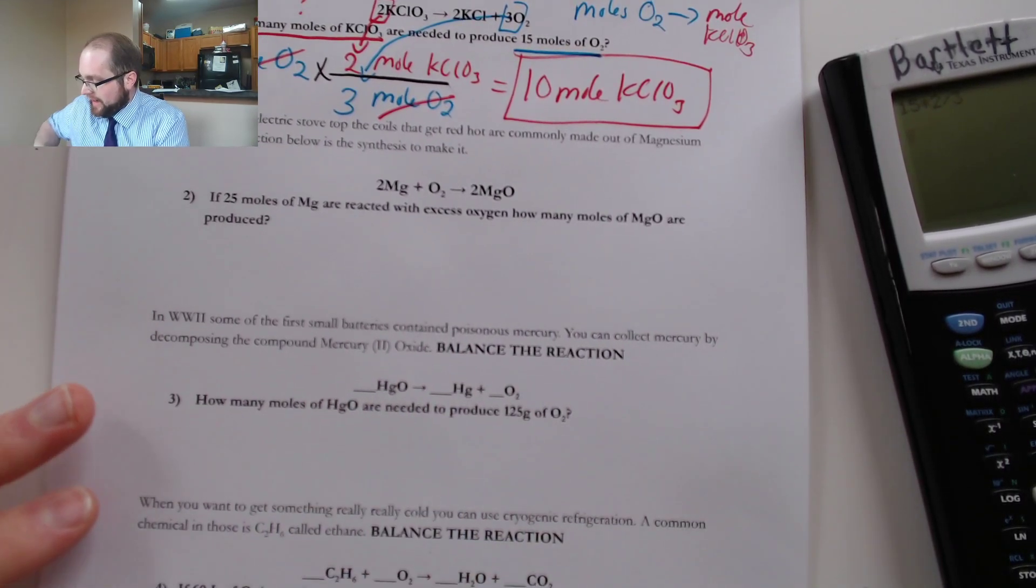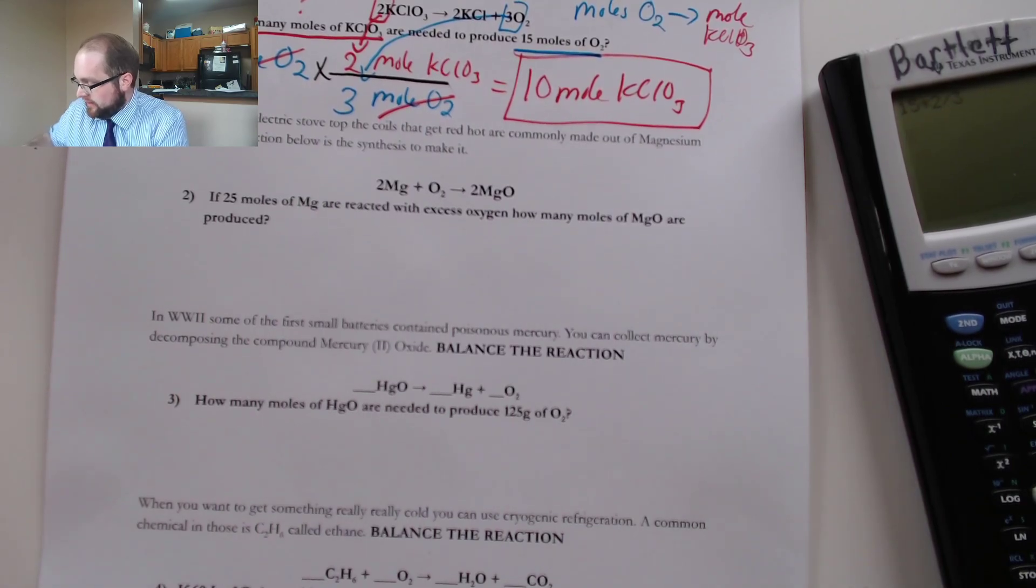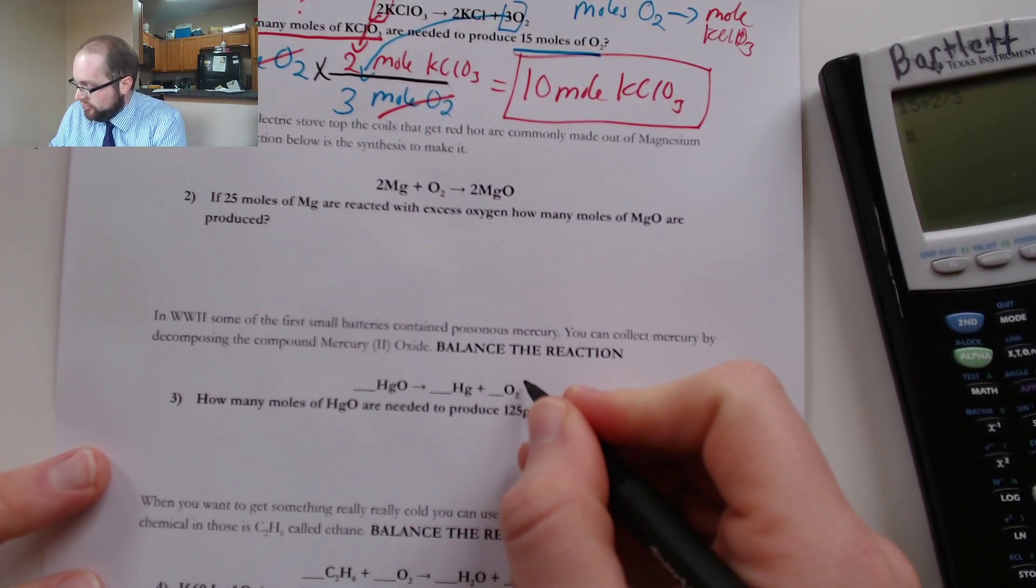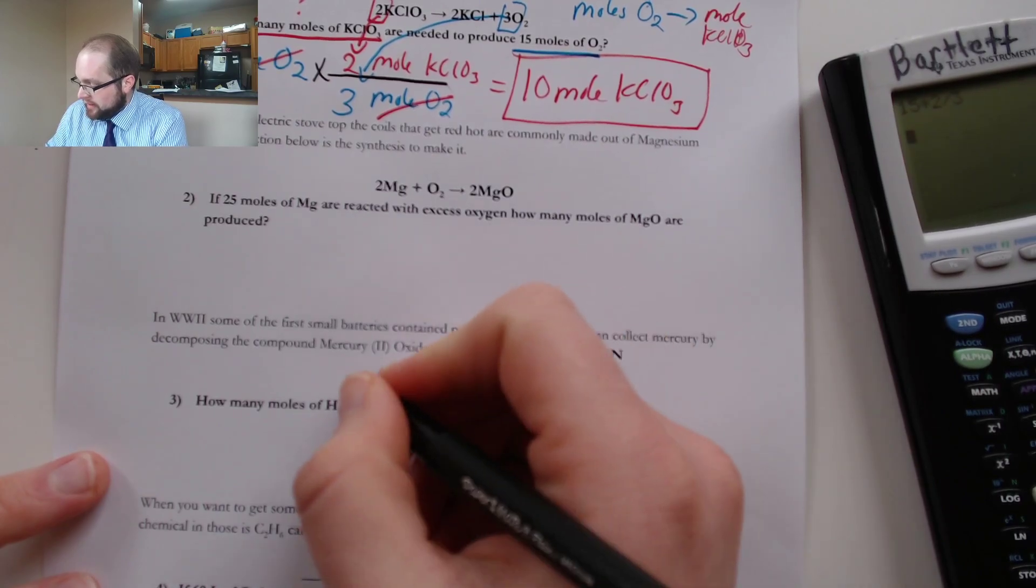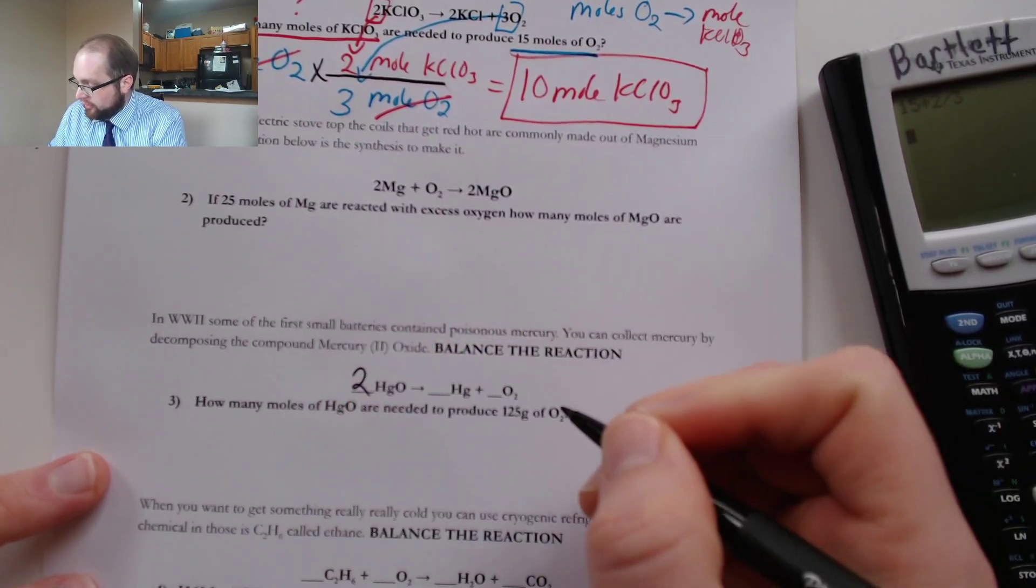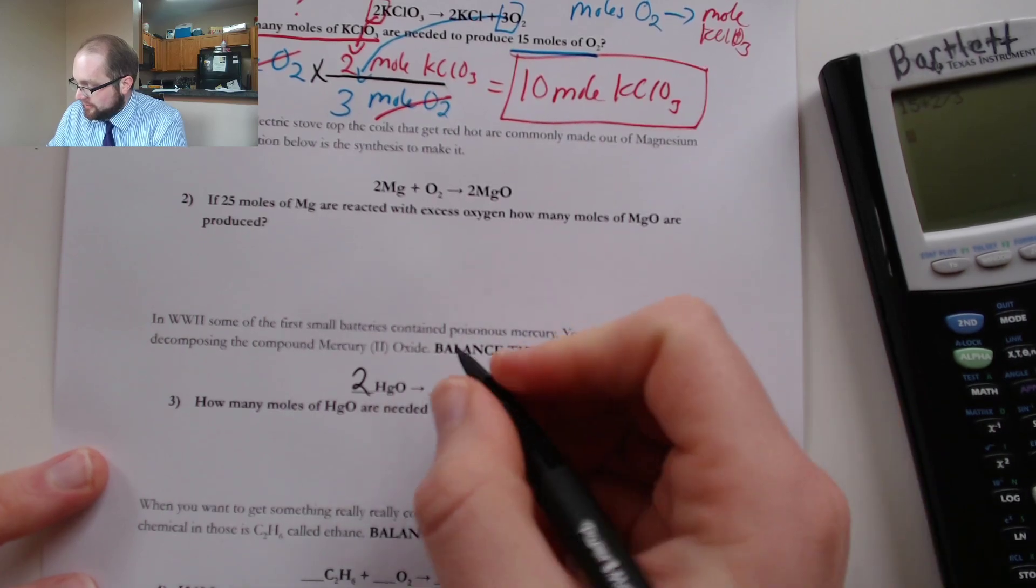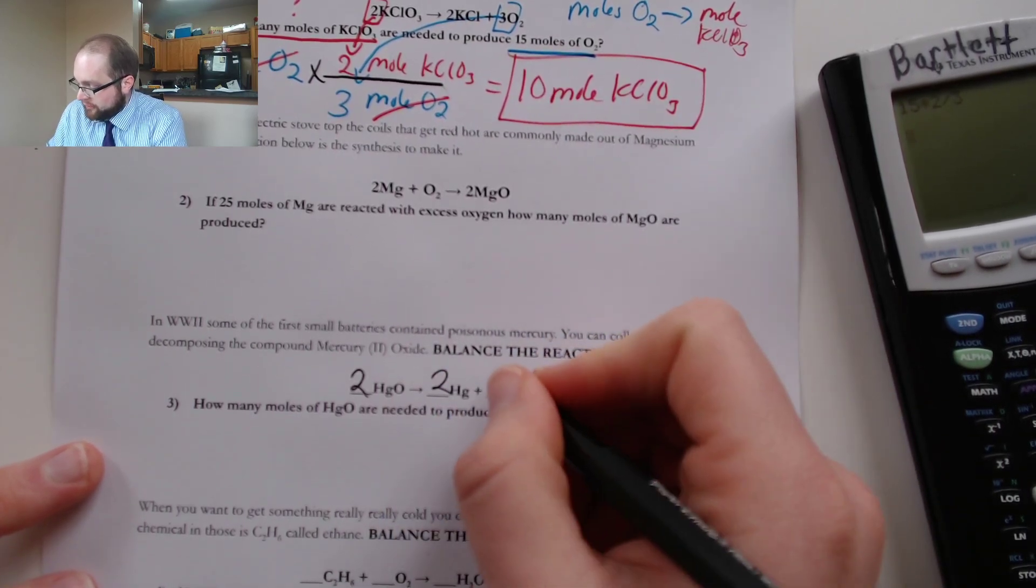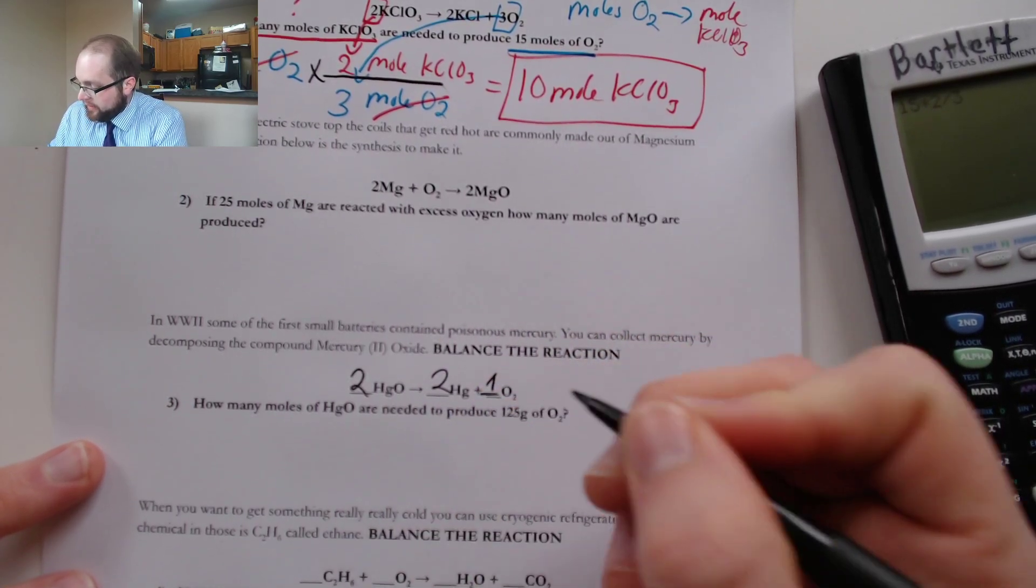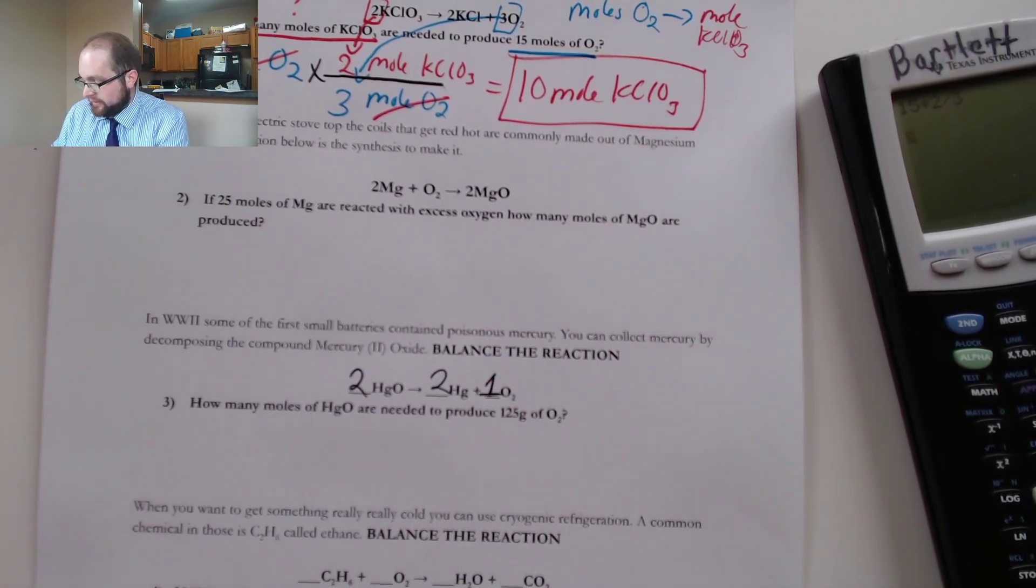So if you want, this is a good time to pause and review some balancing real quick. But right now we can take a look at this and see that I have two O's on the right so I'm going to want to make sure I have two O's on the left, and that means I now have two mercuries so these guys need to balance as well. If I want I can go ahead and put a number one there just for fun to remind myself that I don't need anything else.